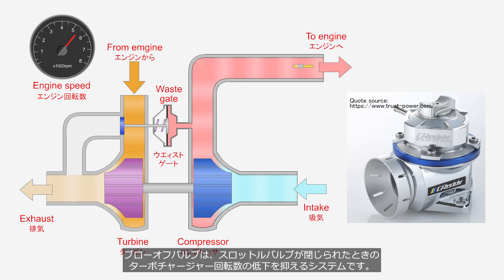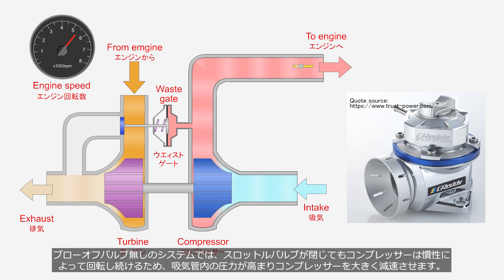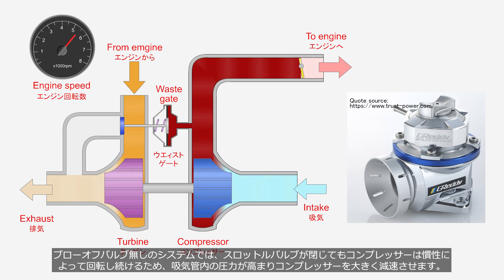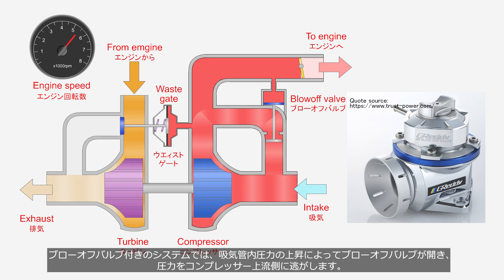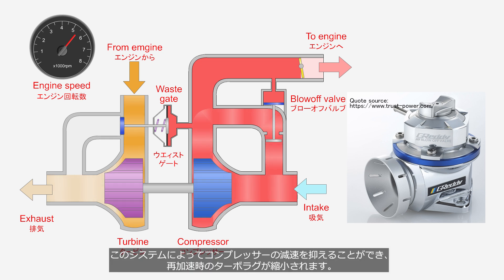The blow-off valve is a system that suppresses the decrease in turbocharger rotation speed when the throttle valve is closed. Without a blow-off valve, even when the throttle valve is closed, the compressor wheel continues to rotate due to inertia, causing increased pressure in the intake pipe and significant deceleration of the compressor wheel. In a system with a blow-off valve, the valve opens in response to increased pressure in the intake pipe, allowing the pressure to escape upstream of the compressor wheel. This helps mitigate deceleration of the compressor wheel, thereby reducing turbo lag during re-acceleration.